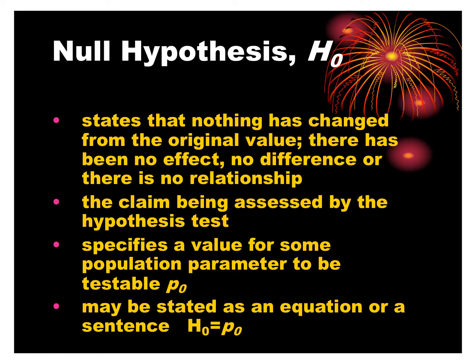For the one-prop-z test, we use p with a subscript 0, which is called p₀. Our p₀ is our hypothesized proportion. We don't know what the population proportion is. We have previous information that makes us believe p₀ is true, and we're going to get a sample to determine whether that is still true or if it has changed.